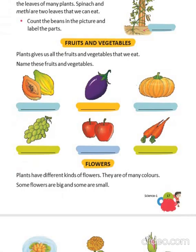Fruits and vegetables come from plants — the plant gives us all the fruits and vegetables. Can you name these? This is a papaya, this is a brinjal, this is a pumpkin. These are grapes, apples, and carrots — all different fruits and vegetables.